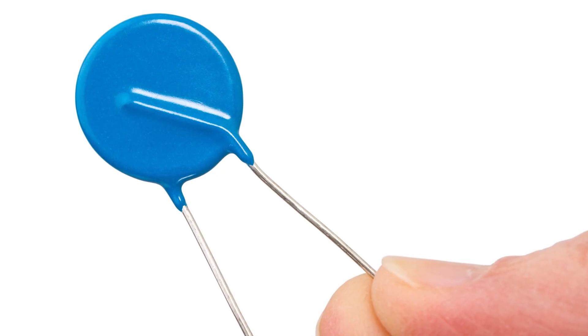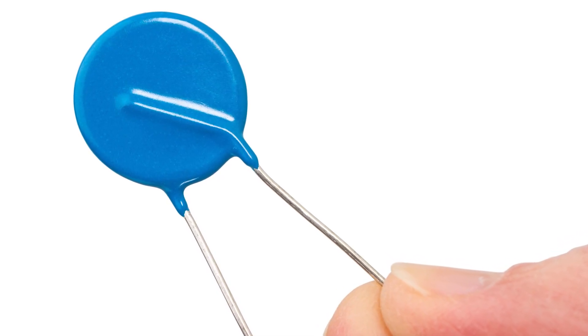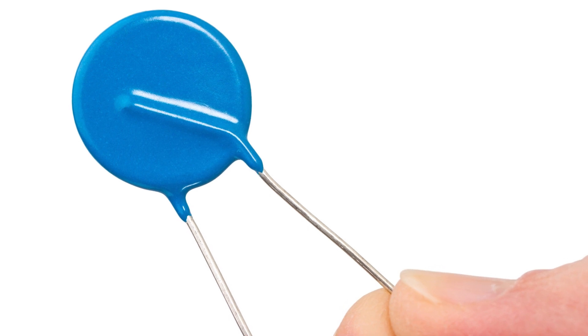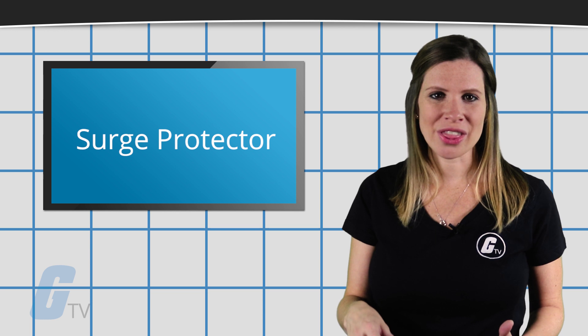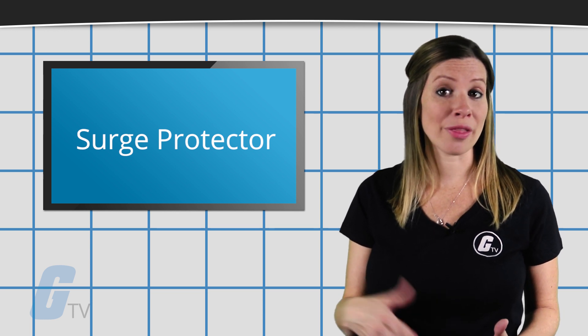One problem with surge protectors is that the MOVs can burn out with one good surge. This is why it's good to get a protector with an indicator light that tells you whether or not it's functioning properly.